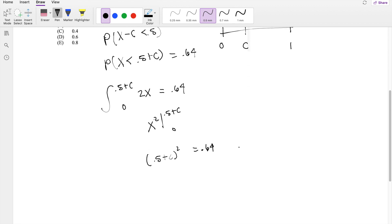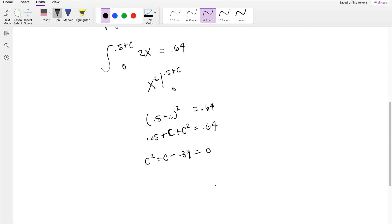Solving this by foiling it, so 0.5 squared is 0.25. Then the term on the inside is gonna be 0.5 plus 0.5, which is just 1, plus C squared is equal to 0.64. Bring the 0.64 to the other side, you get C squared plus C minus 0.64 minus 0.25, which is 0.39, is equal to 0. And now this just becomes a quadratic formula.